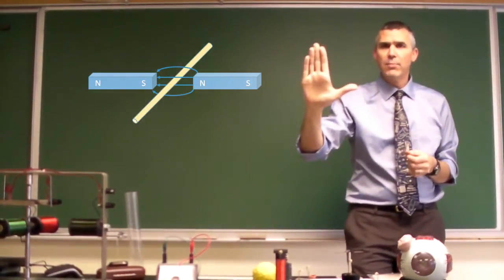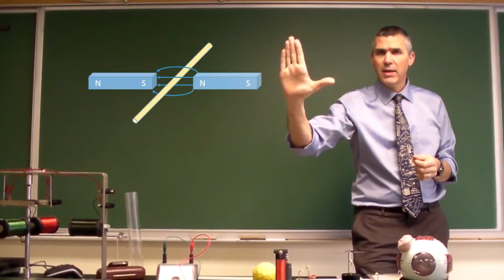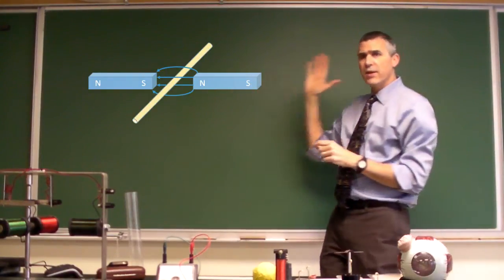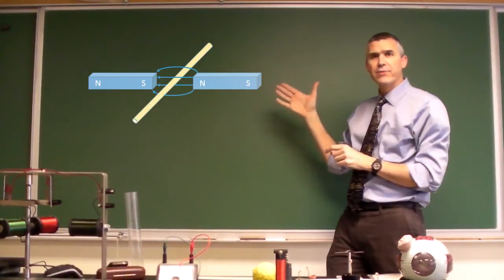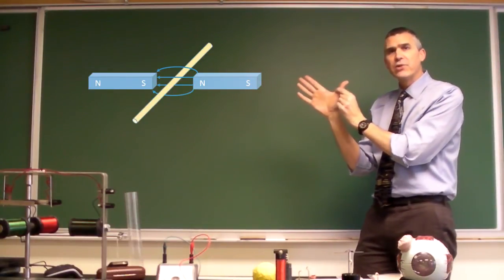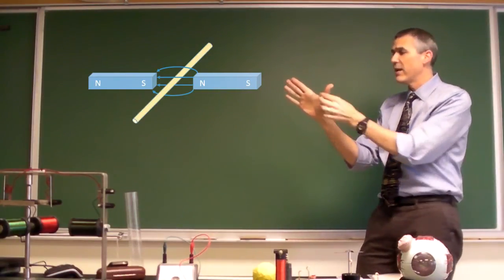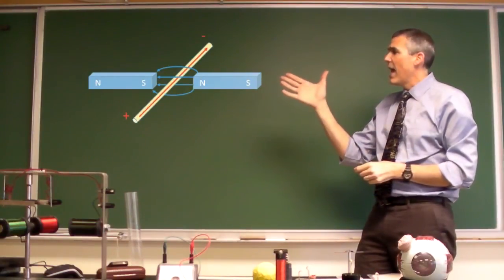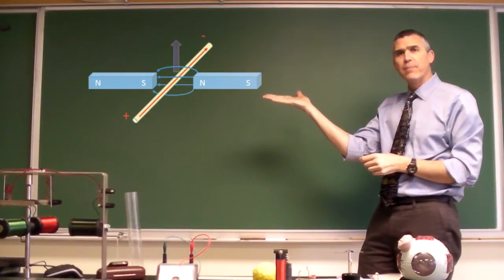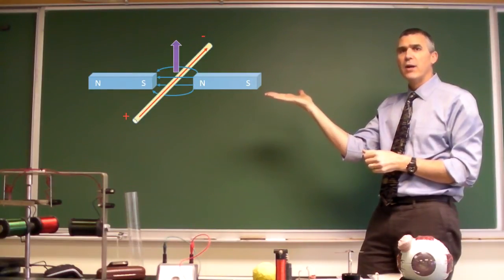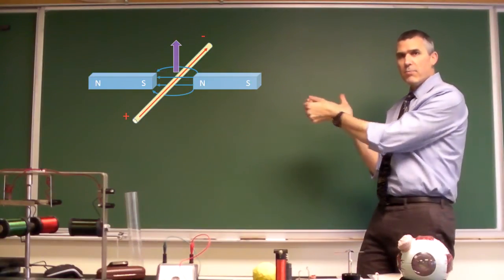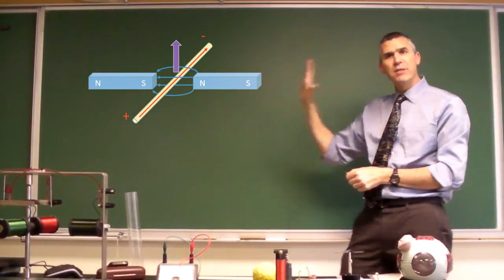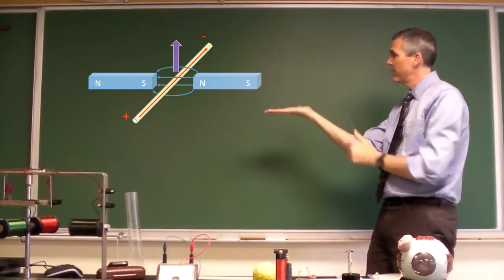Now for rule number three, we're going to hold our hand like this. Notice I have my thumb out to the side at right angles to my fingers. Multiple fingers are going to represent the multiple field lines between the two magnets. The thumb is going to represent the direction of current of that single wire. So again, single wire is the thumb, multiple field lines are the fingers. And the palm of my hand is going to be the direction of the motor force. So: multiple field lines, multiple fingers; single conductor, direction of conventional current; and the palm — the palm that does the pushing — provides the direction of the motor force.